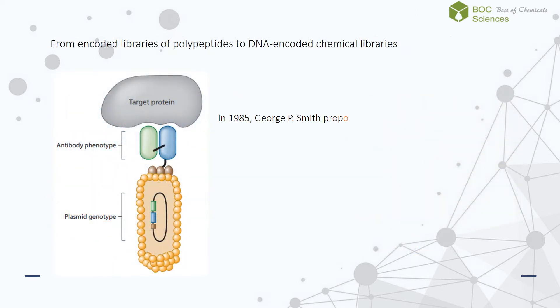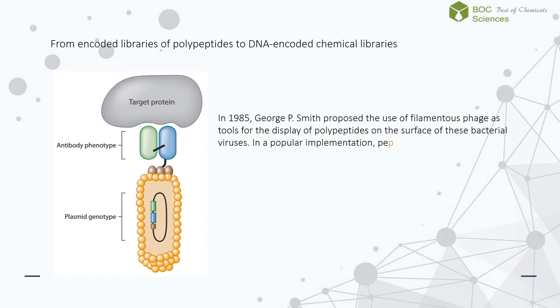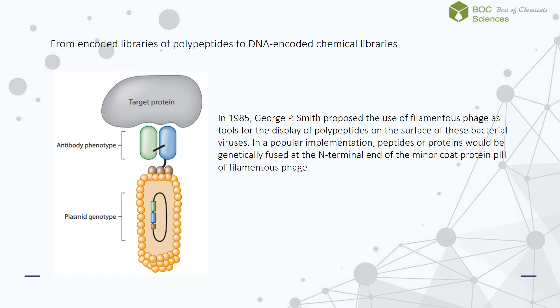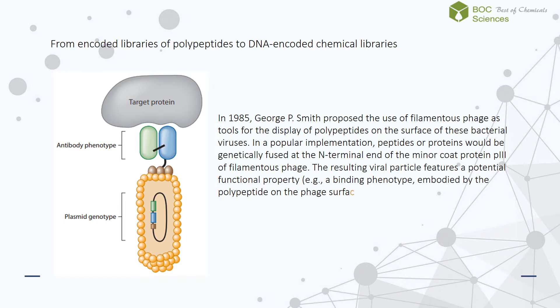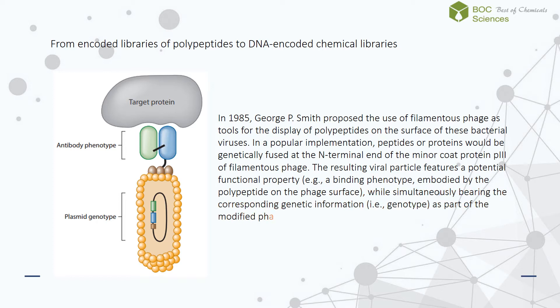In 1985, George P. Smith proposed the use of filamentous phage as tools for the display of polypeptides on the surface of these bacterial viruses. In a popular implementation, peptides or proteins would be genetically fused at the N-terminal end of the minor coat protein P3 of a filamentous phage. The resulting viral particle features a potential functional property, while simultaneously bearing the corresponding genetic information as part of the modified phage genome.